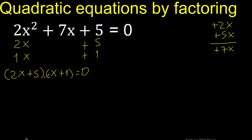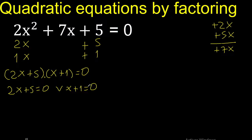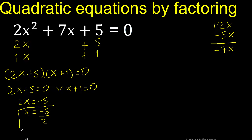Multiplication — therefore this factor equals 0, or this factor equals 0. Minus 5: change the sign. 2: change the sign. Finish.